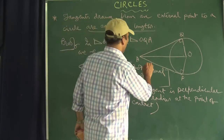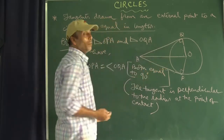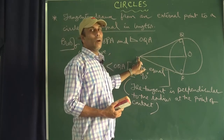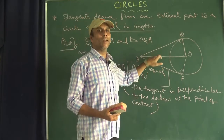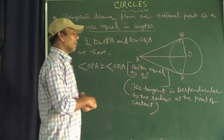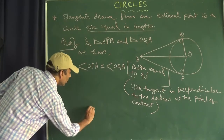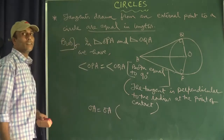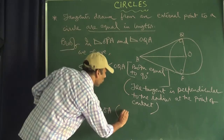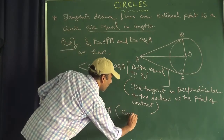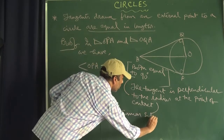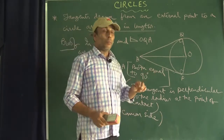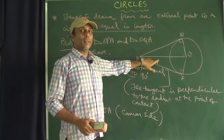Now observe the diagram carefully — you can see the side OA. OA is common to both triangles. So we can write OA equal to OA, and its reason is common side. Also, OA is opposite to the right angle in each triangle, so OA is the hypotenuse.